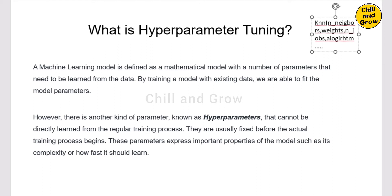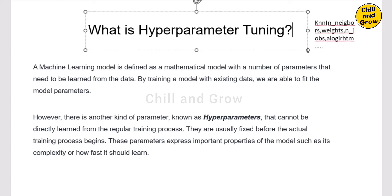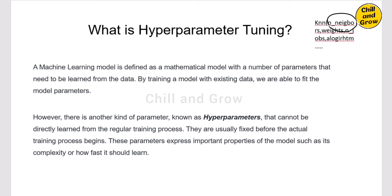If you look at these parameters, most of them are not available by default. Weights, algorithms, N jobs are not available. The model is available as a default value — that is the training. That is not available as parameters. Hyperparameters are available as a machine learning model. So the parameters are hyperparameters. If you look at KNN, N neighbors is a hyperparameter.